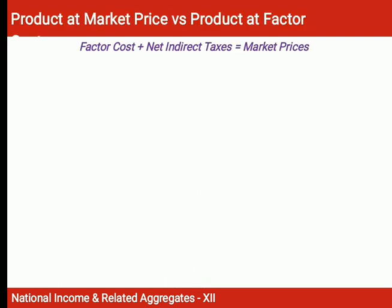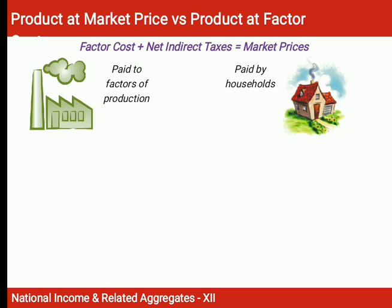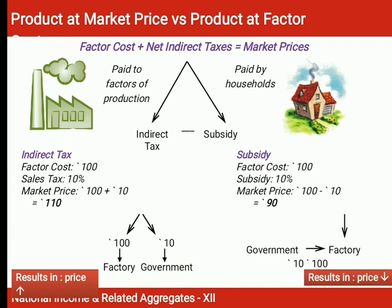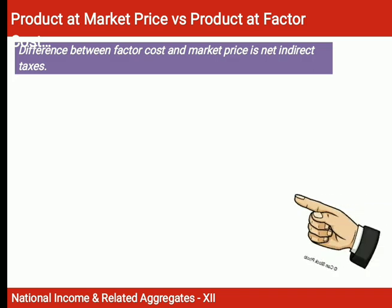Factor cost plus net indirect taxes equals market price. Net indirect taxes are the difference between indirect taxes and subsidies. Factor cost is paid to the factors of production, and market price is paid by the household. For example, if factor cost is Rs. 100 and sales tax is 10%, the market price is Rs. 110 — taxes increase the price. But if factor cost is Rs. 100 and a subsidy of 10% applies, the market price becomes Rs. 90, which reduces the price of the commodity.